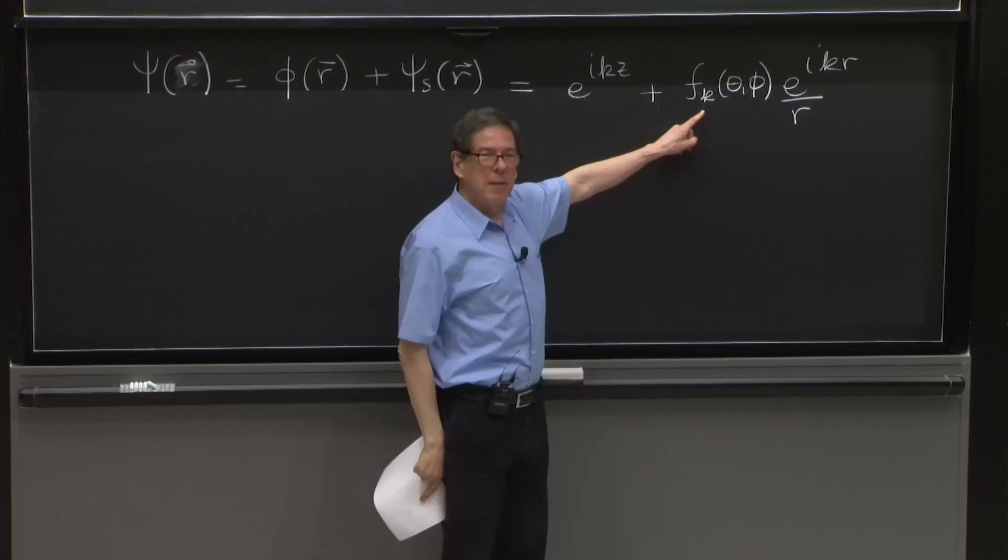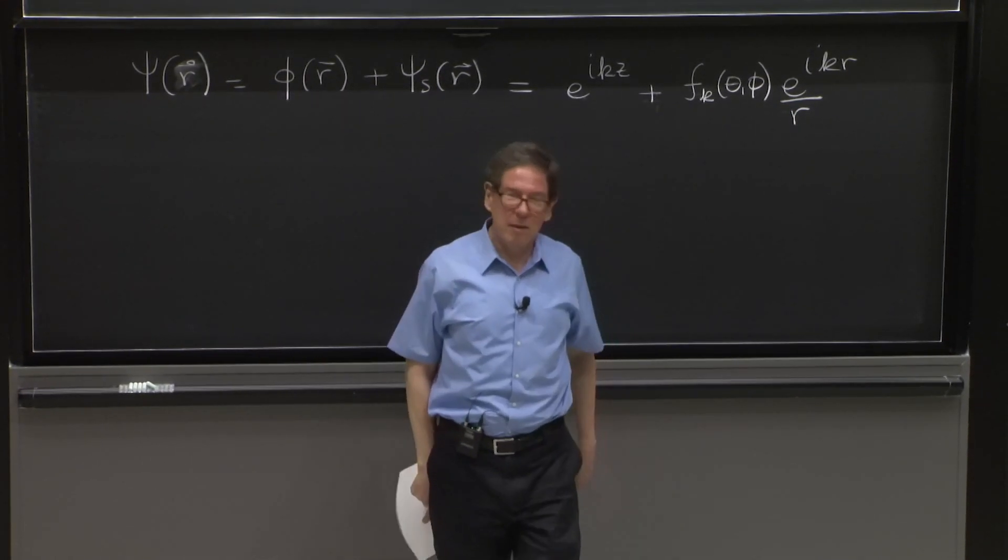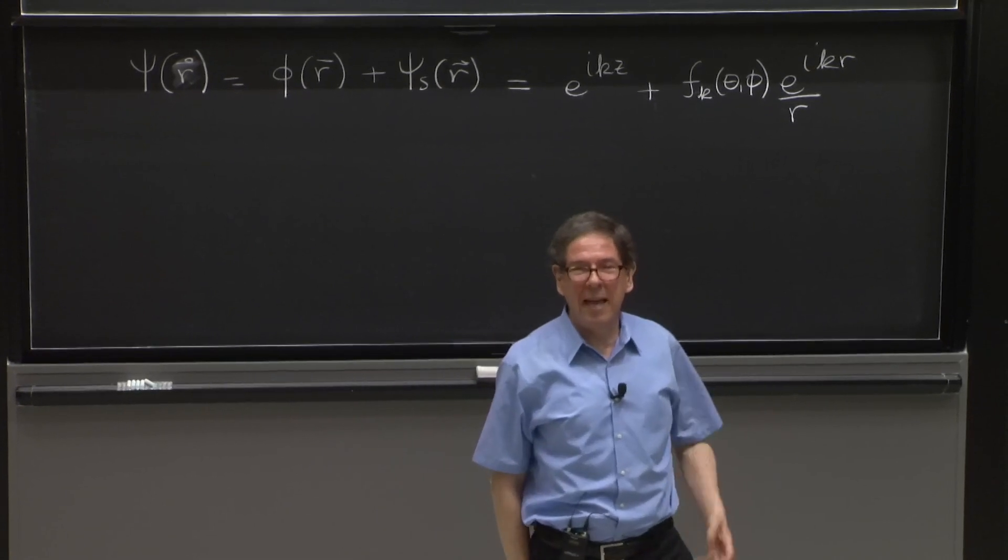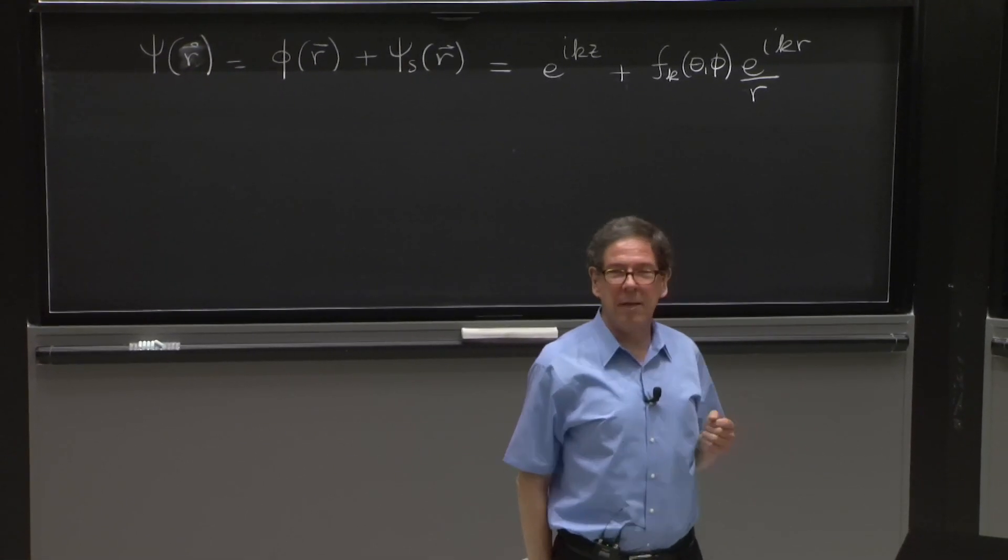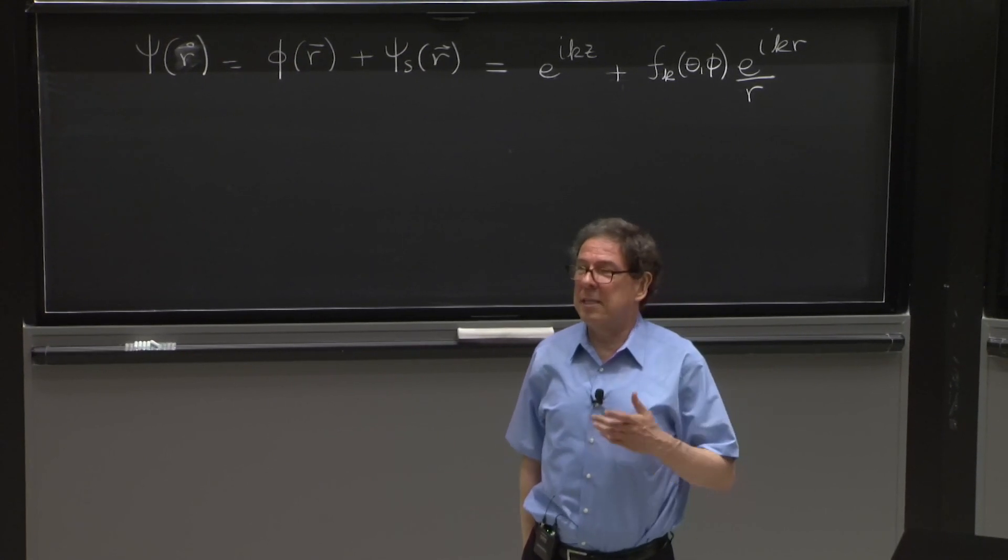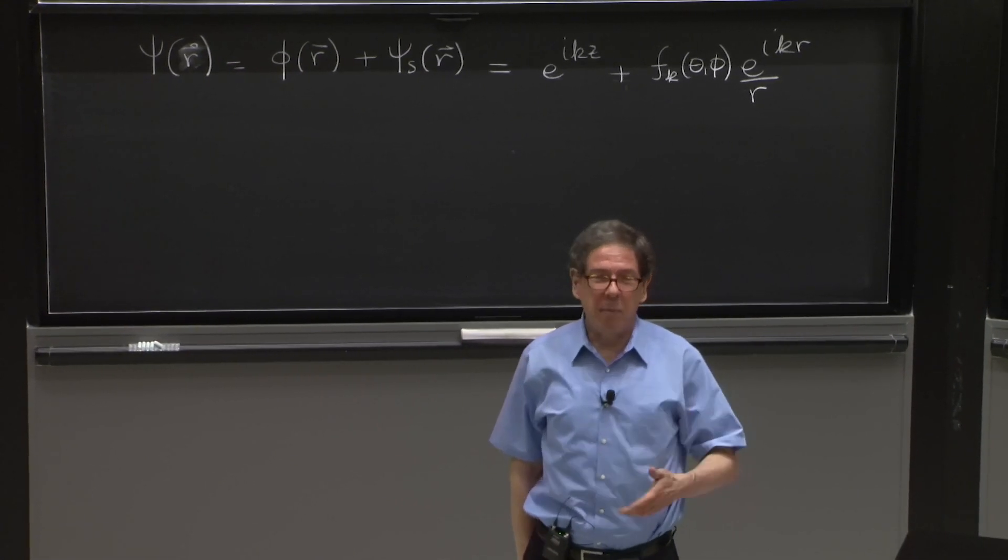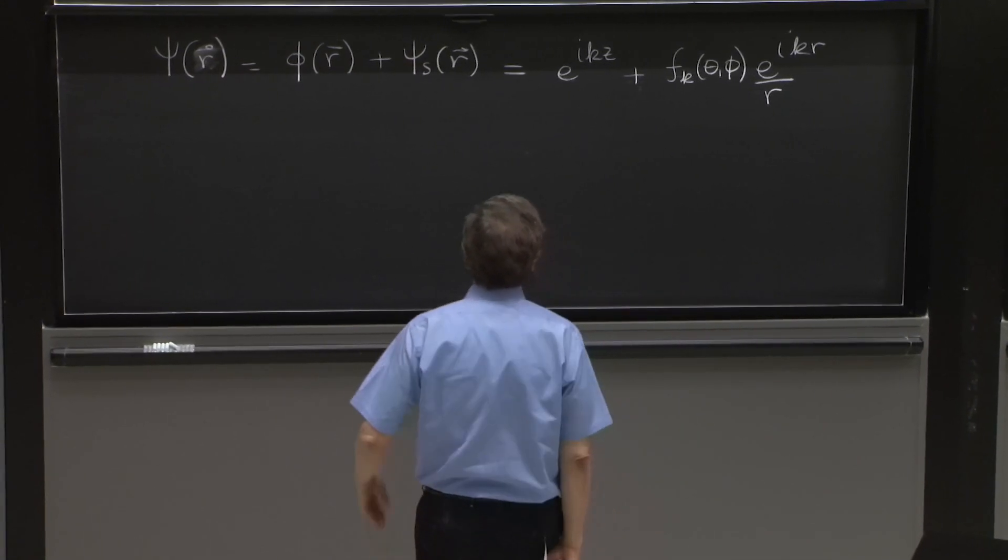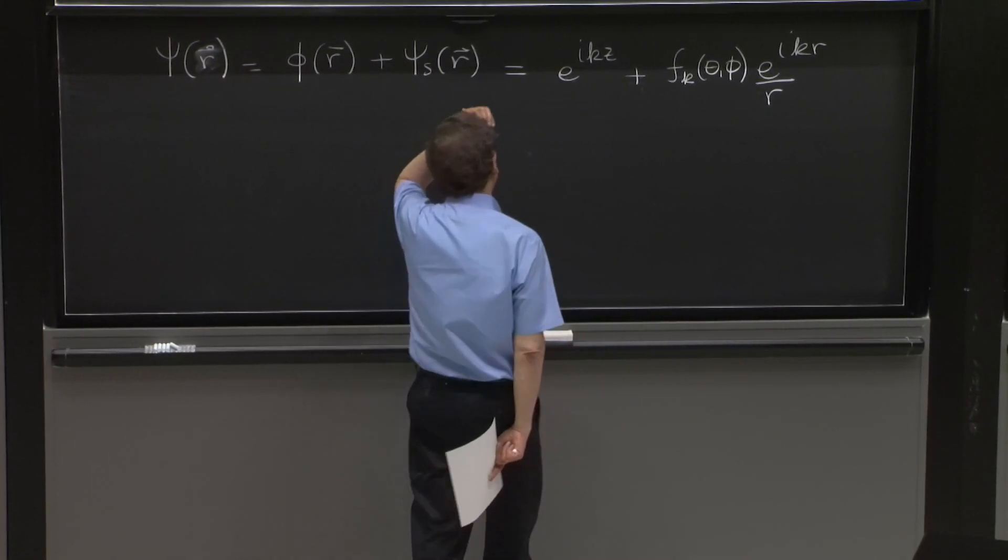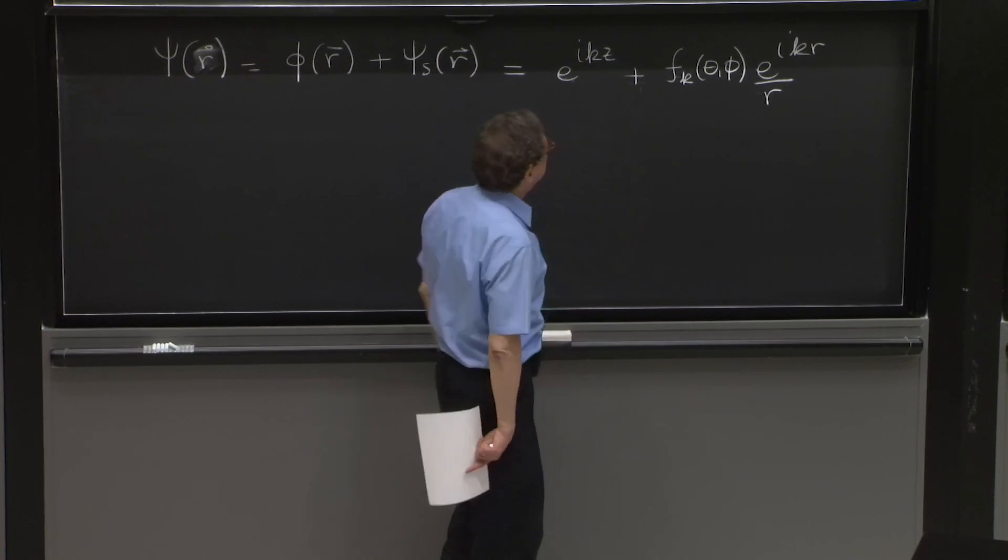I've added the subscript k to represent the wave number, or the k of the wave. This is an energy eigenstate we're calculating. And therefore, the energy is k squared, ℏ² k² over 2m. And we're writing a solution with that energy. That's an energy eigenstate.